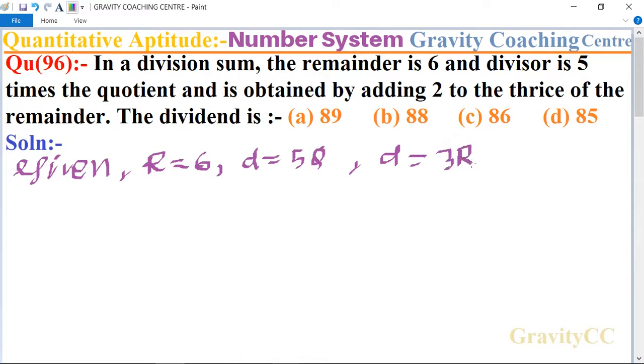The value of remainder R is 6. So 3 into 6 plus 2: 3 times 6 is 18, plus 2 equals 20. So the divisor is 20. Now we put D = 20 = 5Q.